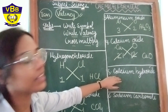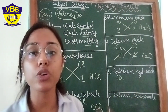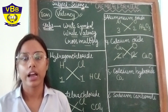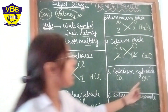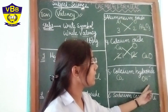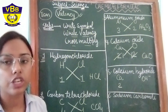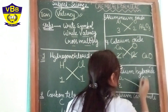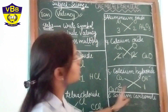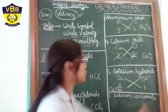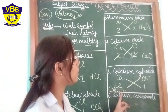Next is calcium hydroxide. The symbol of calcium is Ca and hydroxide is OH⁻. In this ion there are 2 atoms, not a single atom. The valency of calcium is 2 and the valency of OH is 1. When we cross multiply, we get Ca(OH)2 — the 2 is multiplied by both O and H, so we make a bracket and write 2. The formula is Ca(OH)2.